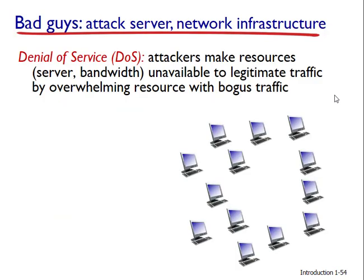Criminals attack servers and network infrastructures. Another broad class of security threats are known as denial of service attacks. A denial of service attack renders a network, host, or other piece of infrastructure unusable for legitimate users. Web servers, email servers, DNS servers, and institutional networks can all be subject to DOS attacks, which are extremely common with thousands occurring every year. Most Internet DOS attacks fall into one of three categories. A vulnerability attack involves sending a few well-crafted messages to a vulnerable application or operating system; if the right sequence of packets is sent, the service can stop or the host can crash.